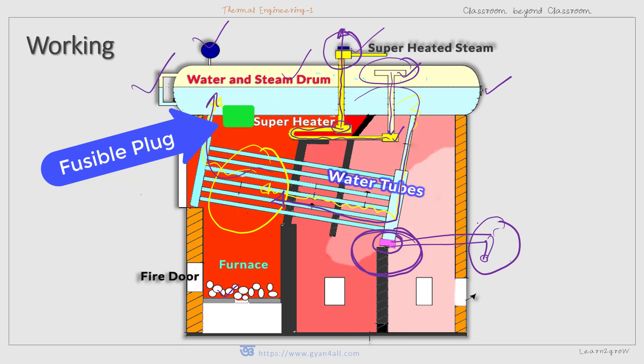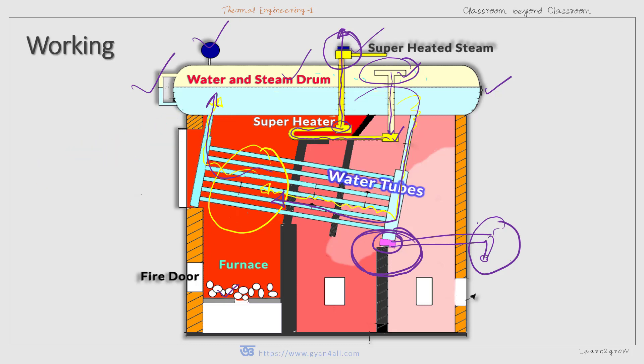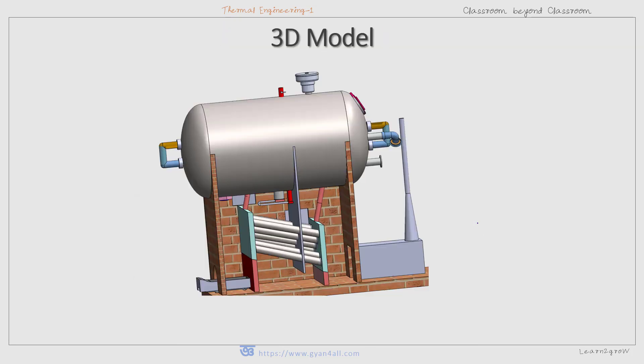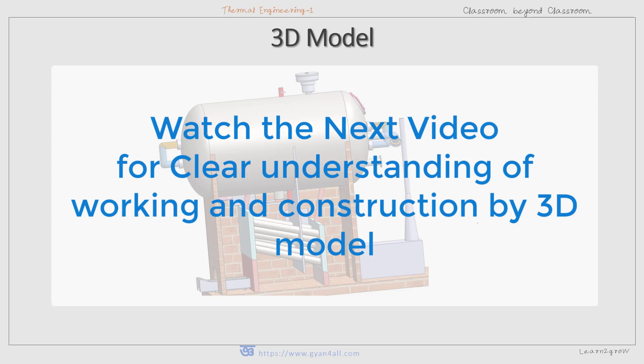In the Babcock and Wilcox boiler, water passes through the tubes which are heated by combustion gases. There are two headers: the downtake header and the uptake header. Steam goes to the drum through the uptake header, and water comes back down through the downtake header, establishing natural circulation. The 15-degree inclination of the tubes is essential for effective convective current. Finally, a 3D model will further clarify the working principle of the Babcock and Wilcox boiler.